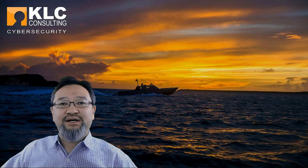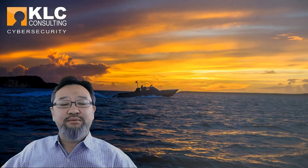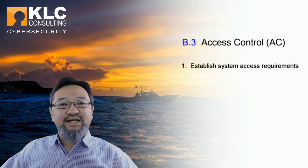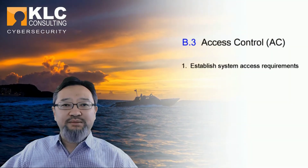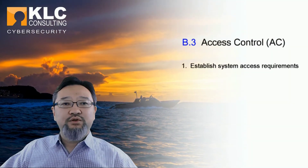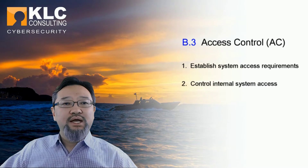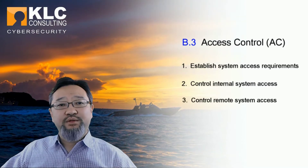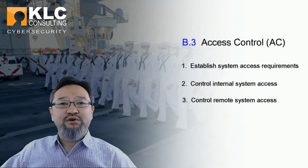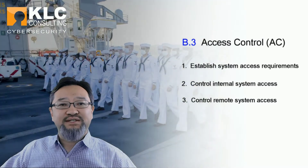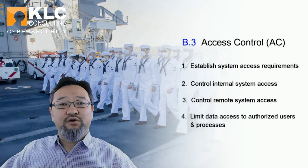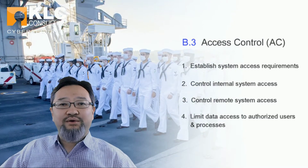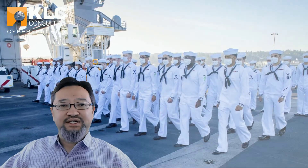Access requirements are developed based on the organization's needs balanced with the security requirements needed to protect the organization's assets. The Access Control domain contains four capabilities: 1. Establish system access requirements, 2. Control internal system access, 3. Control remote system access, and 4. Limit data access to authorized users and processes.